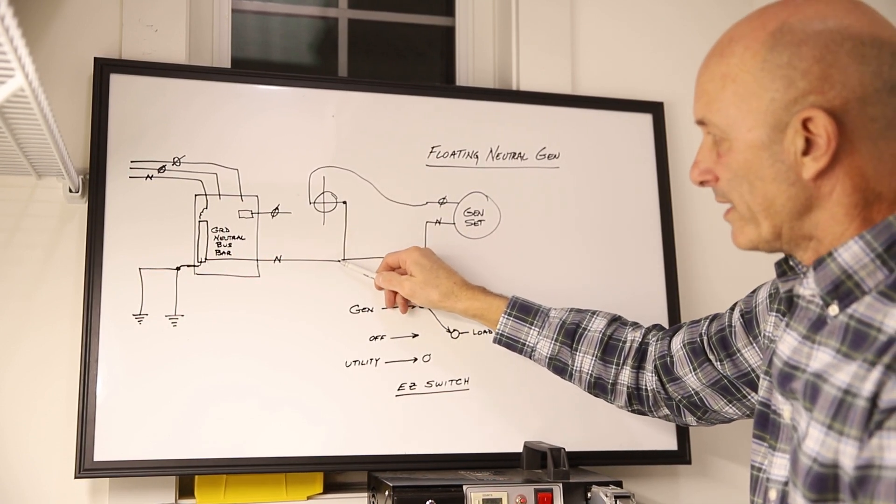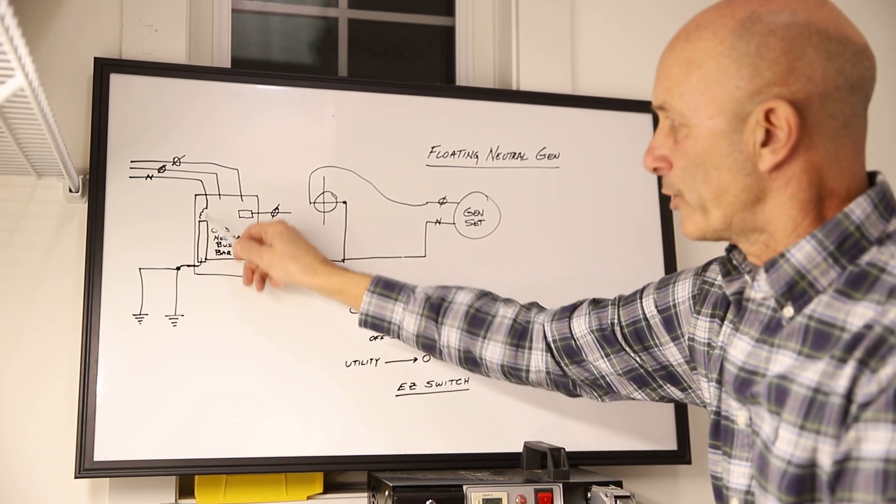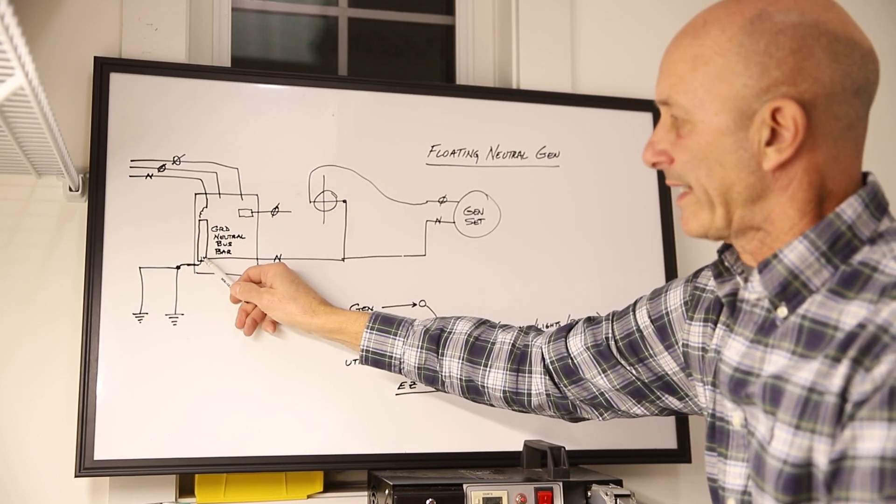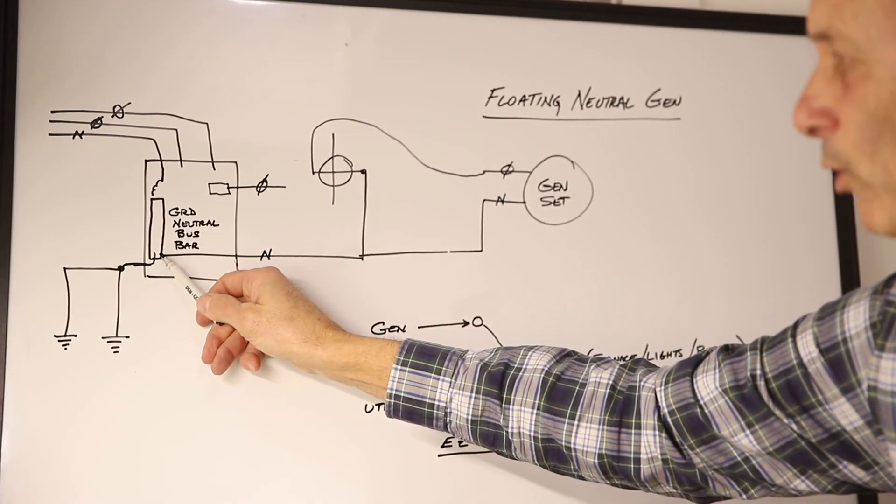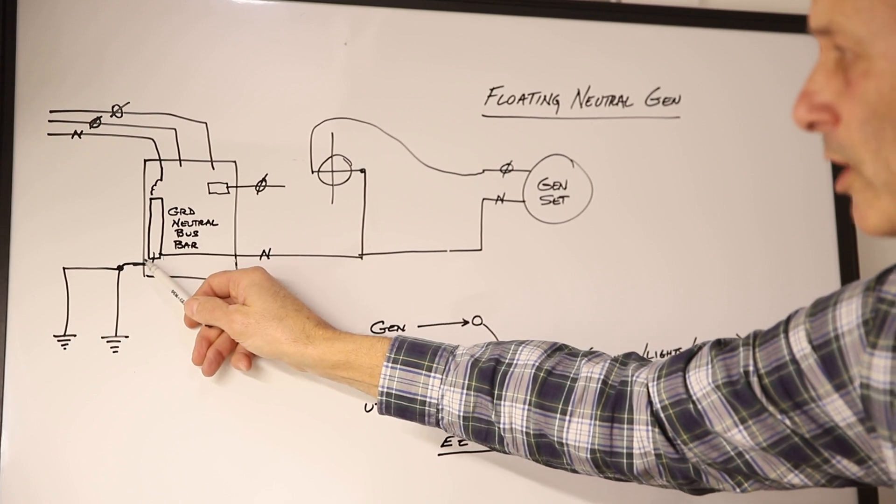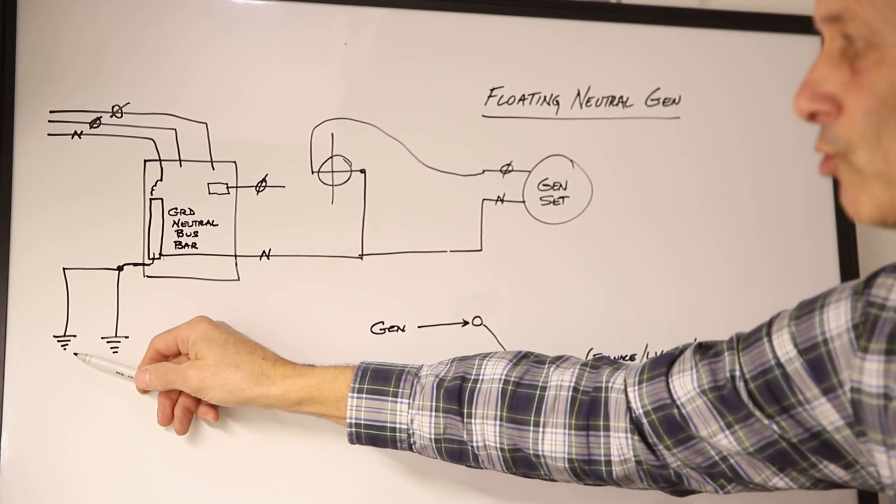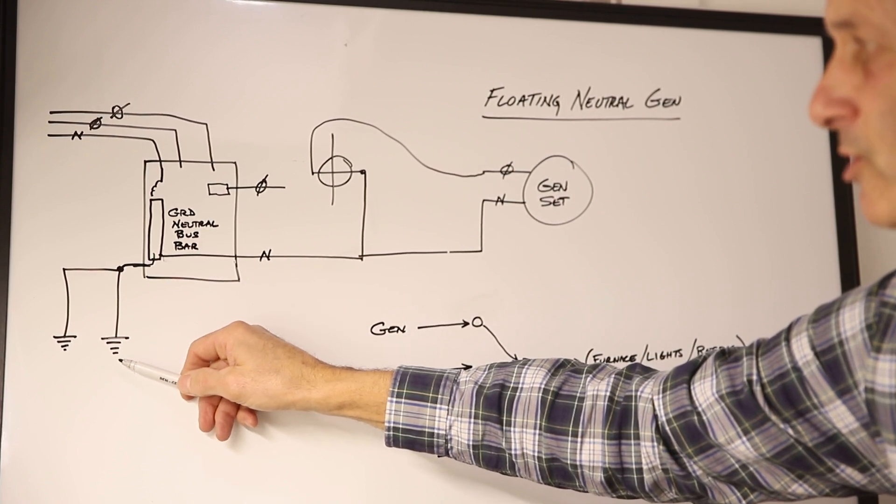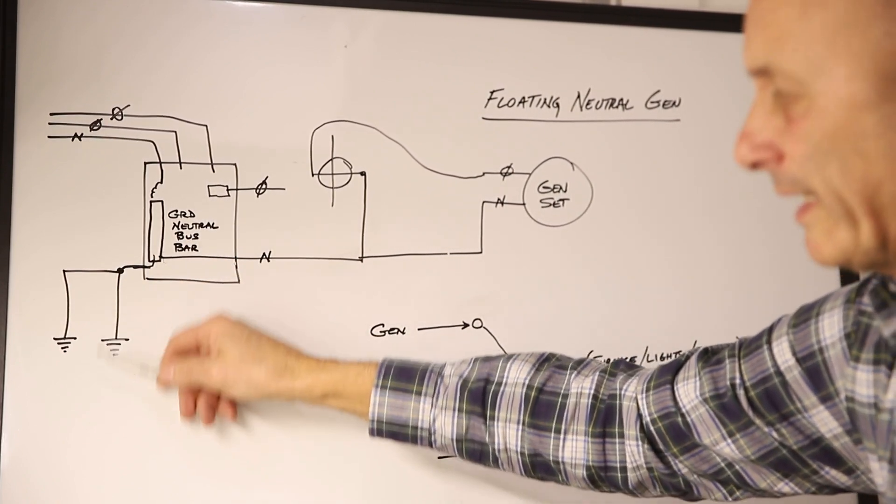But if there is transient voltage going this way, inside your main panel, it's connected to the bus bar, the ground neutral bus bar, and that voltage, that transient voltage will leak to the two ground rods or the two means of grounds that you have in the house per the national electrical code. It will leak out this way. It will bleed out to ground.